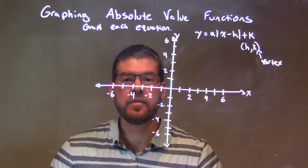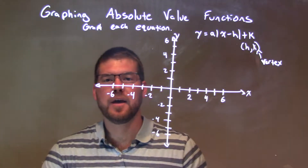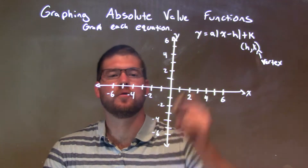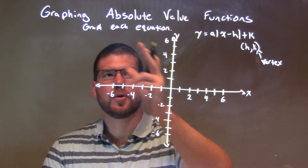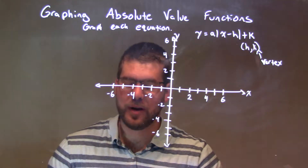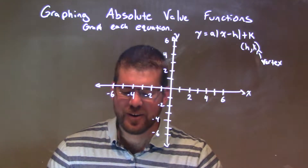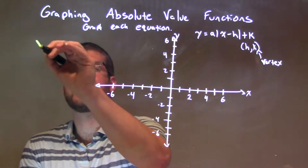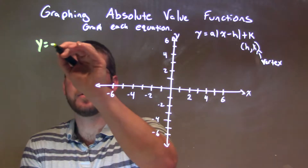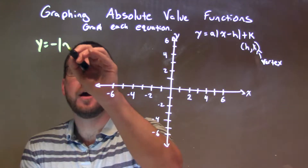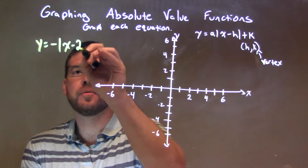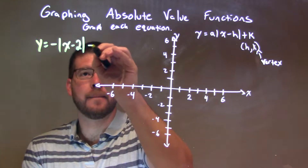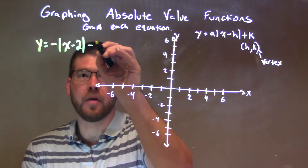Hi, I'm Sean Gantt, and this is MinuteMath, and today we're going to learn about graphing absolute value functions. We're going to graph each function. So if I was given this equation: y equals negative absolute value of x minus 2, and then minus 2 on the outside.